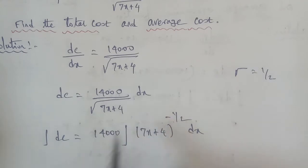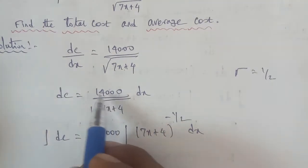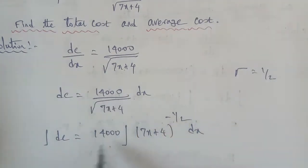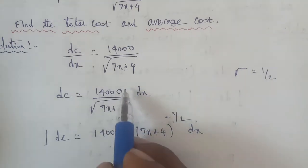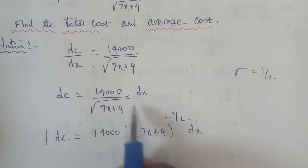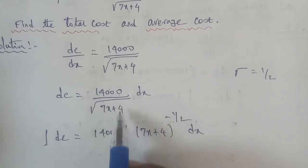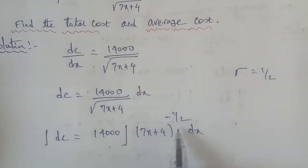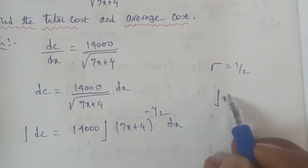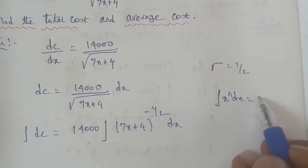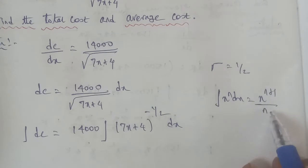Applying the integration of DC on both sides, the integration of DC is equal to C. The 14,000 value is brought out. We have 1 by square root of 7x plus 4, which equals (7x plus 4) to the power of minus 1 by 2. We now apply the integration formula: integration of x to the power n into dx equals x to the power n plus 1, divided by n plus 1.